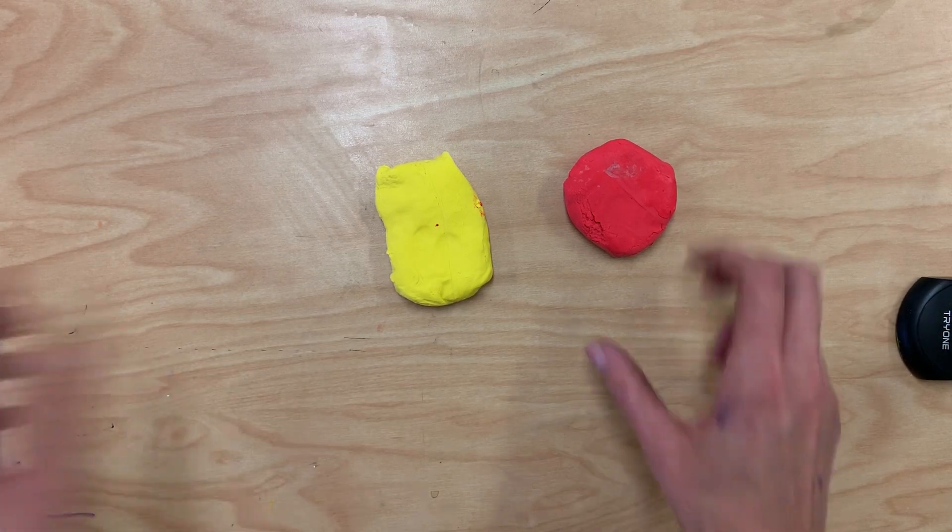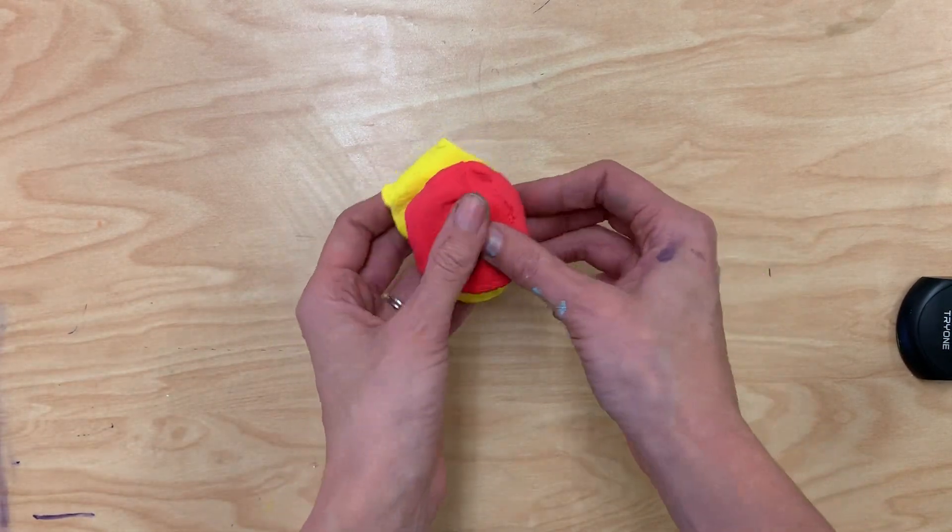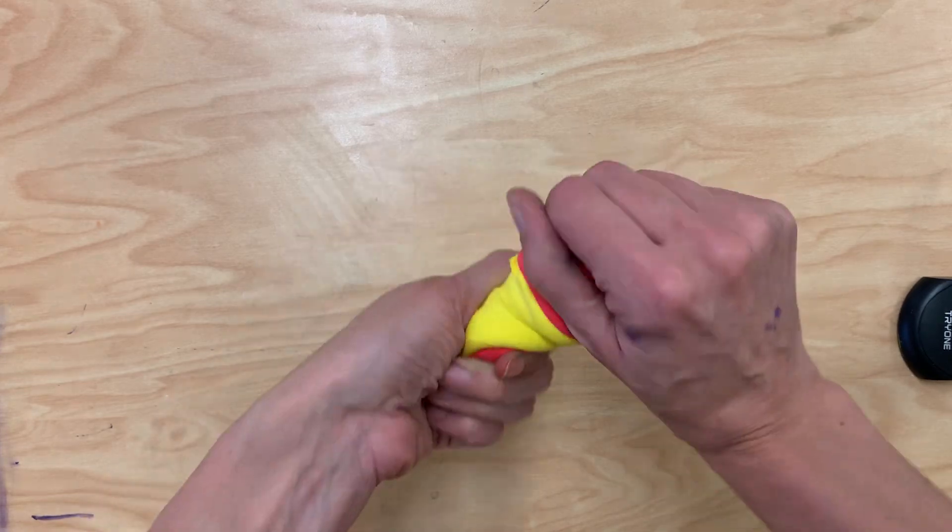First we are going to take the red and the yellow and mix them together so we can have a little bit of fun with this one.